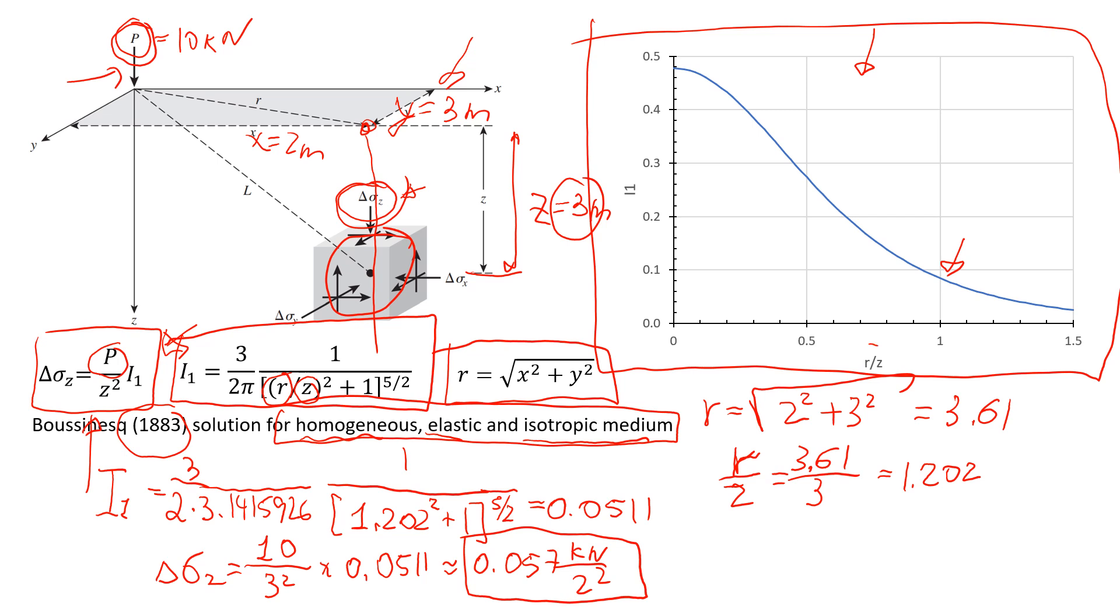So I change r over z. So I started from 0, then 0.1, 0.2, and I put these numbers in this formula, and I estimated this value i1. So because you see this value i1 just depends on r and z. That's how they change.